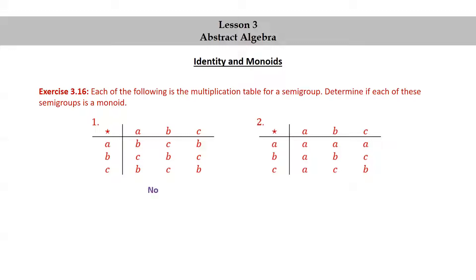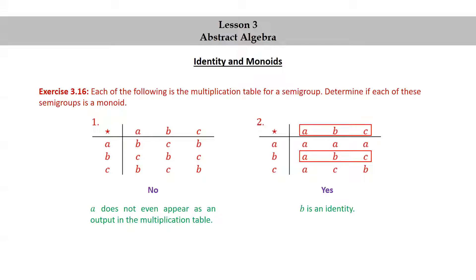For the first one, the answer is no — A does not even appear as an output in the multiplication table. For the second one, the answer is yes. B is an identity, as we can see by noticing that the row corresponding to B matches the input row, and the column corresponding to B matches the input column.